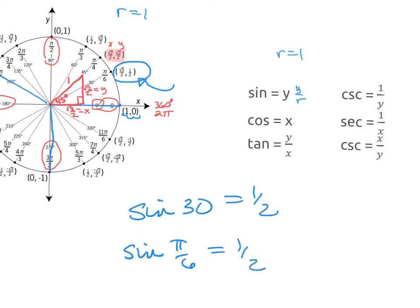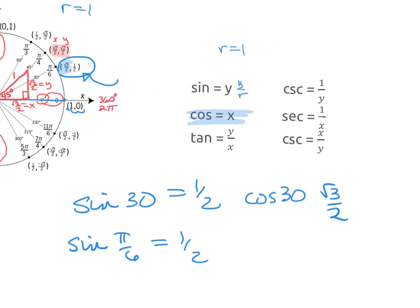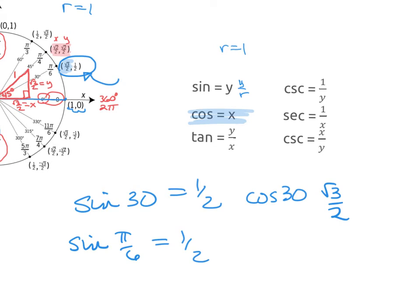If I said to do cosine of 30 degrees, I'd come over here, same ordered pair, but now cosine uses x. So I look at the x of the ordered pair, and it's going to be square root 3 over 2. You can still use your triangles and find your reference angle, but now if you have a picture of the unit circle, you can reference that and it simplifies your process.